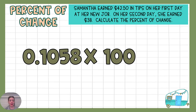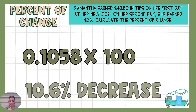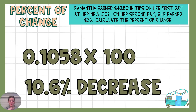Divide that by $42.50. It is a very long decimal — I've chosen to round it here to 0.1058. Multiply that by 100, and rounding, we get a 10.6% decrease. She went down; she made less on her second day.